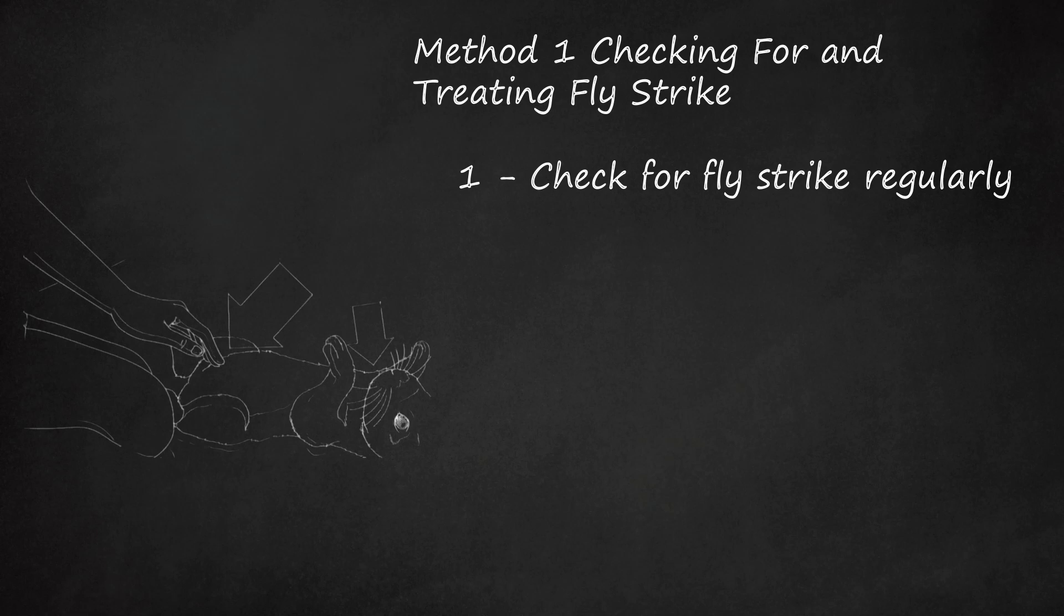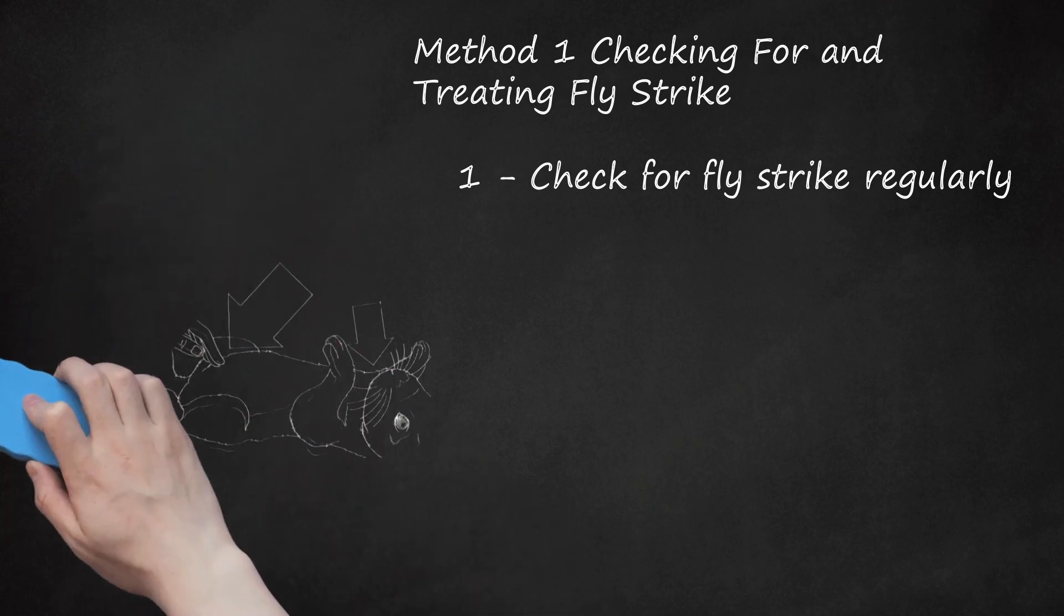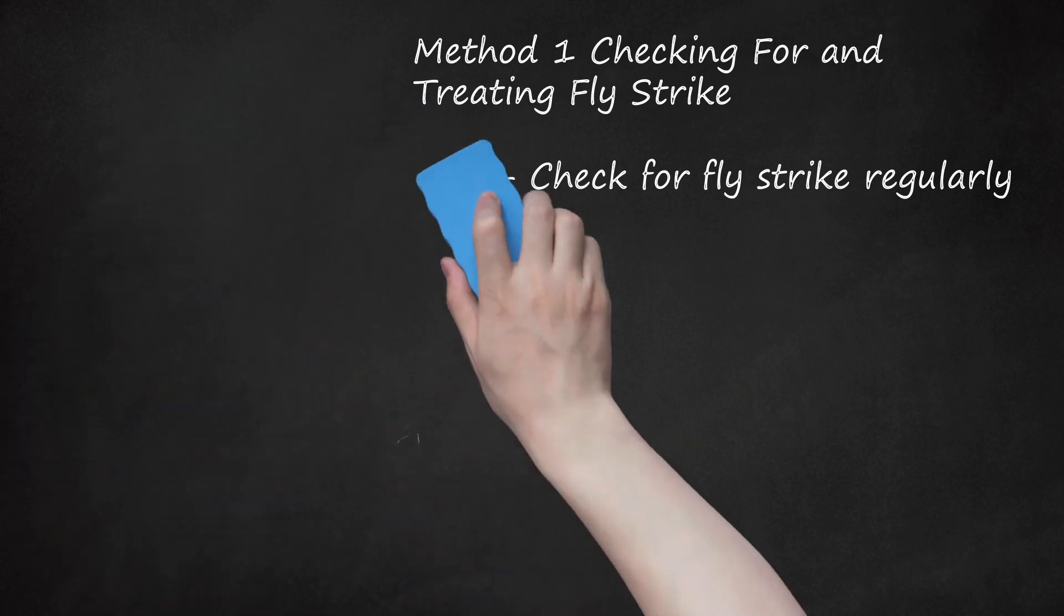This means picking the rabbit up and visually inspecting all areas including between the armpits, groin, under the tail, genital area, dewlaps, skin folds and tail base.